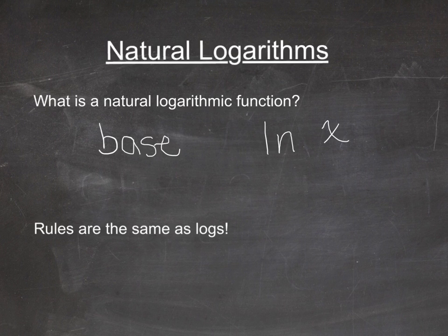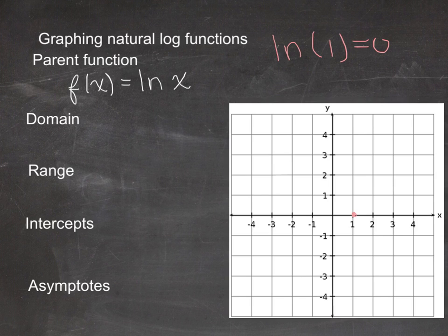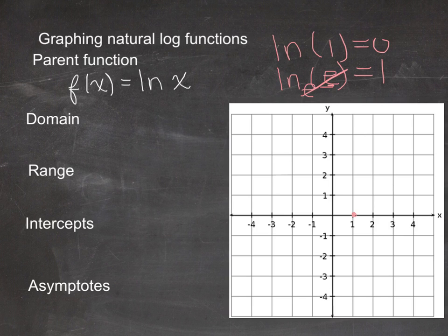Now let's look at graphing. The parent function is f(x) = ln(x), and remember that's just base e. If we put x = 1 in, we get ln(1) = 0, same as with regular logs. So we have an x-intercept at (1, 0). And when x = e — that constant approximately 2.7 — ln(e) equals 1.